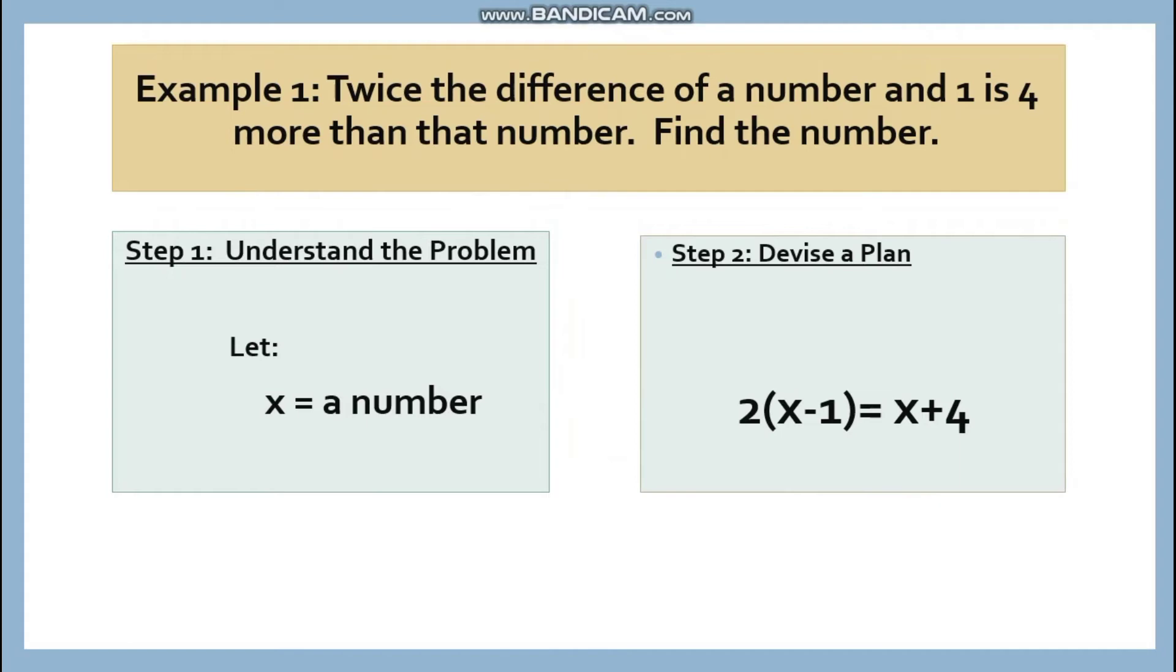A number, let's see X. Variable X. Step two, we have devise a plan. Or you're going to translate. We have two times the quantity of X minus one is X plus four.